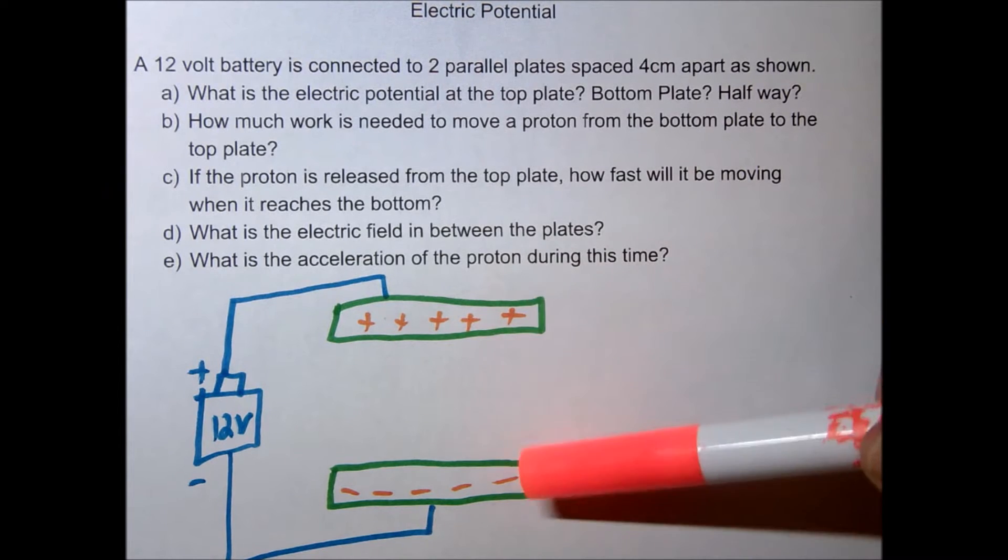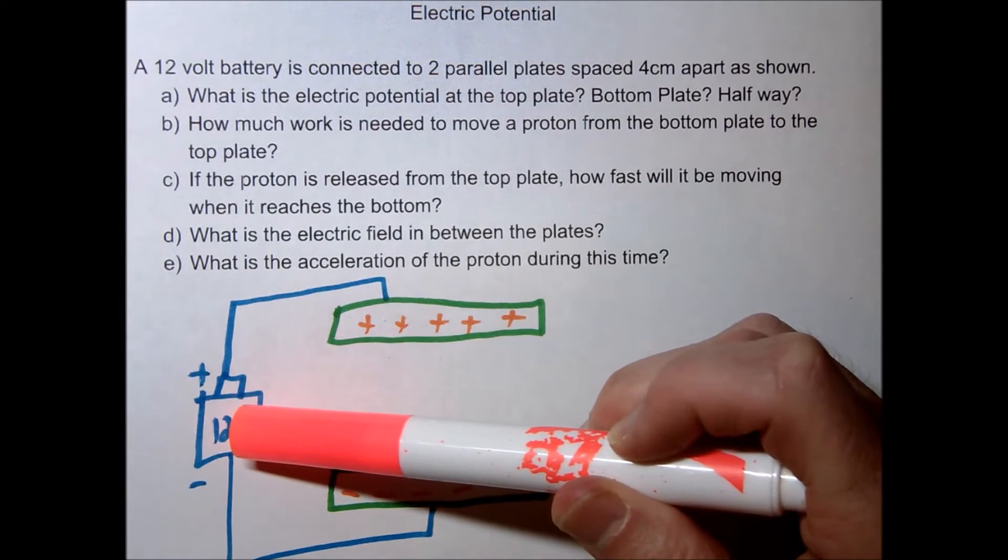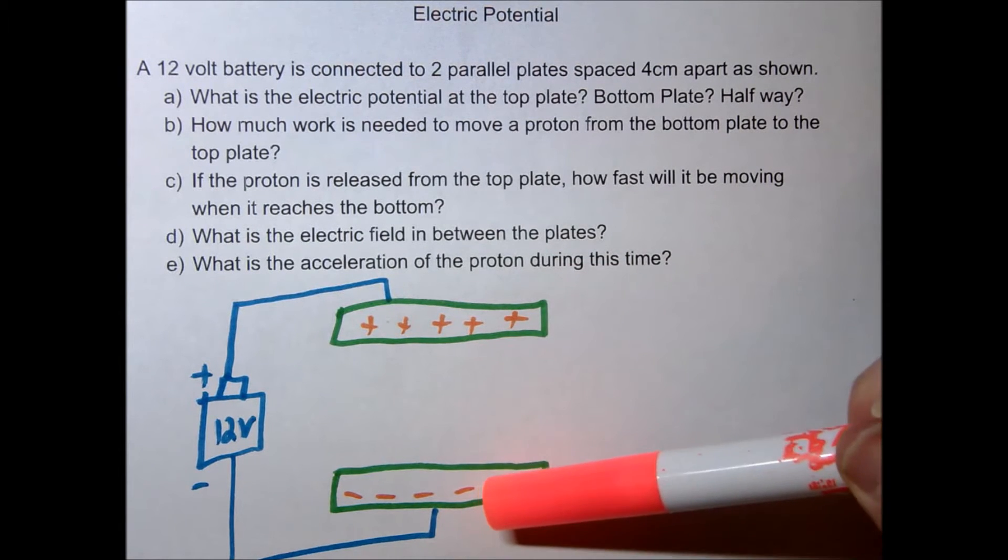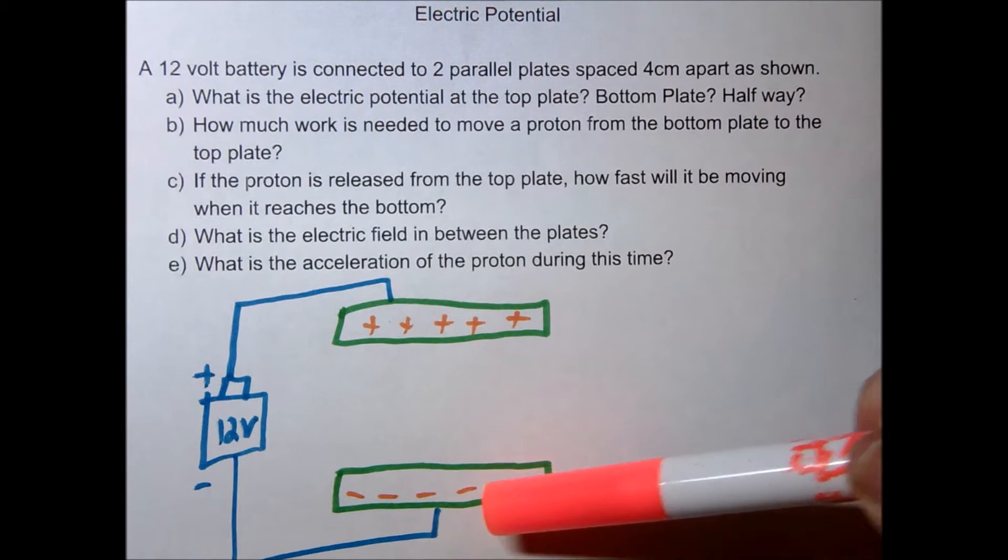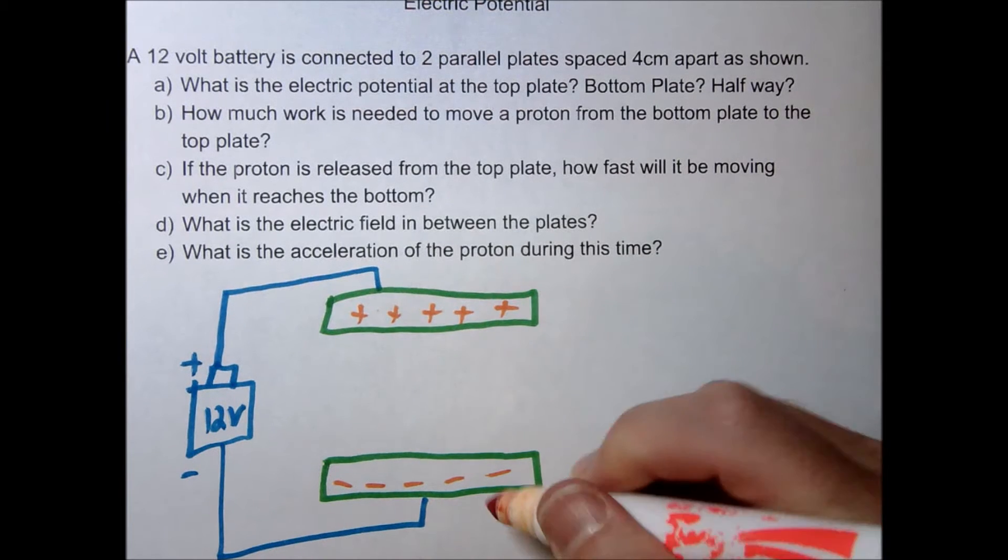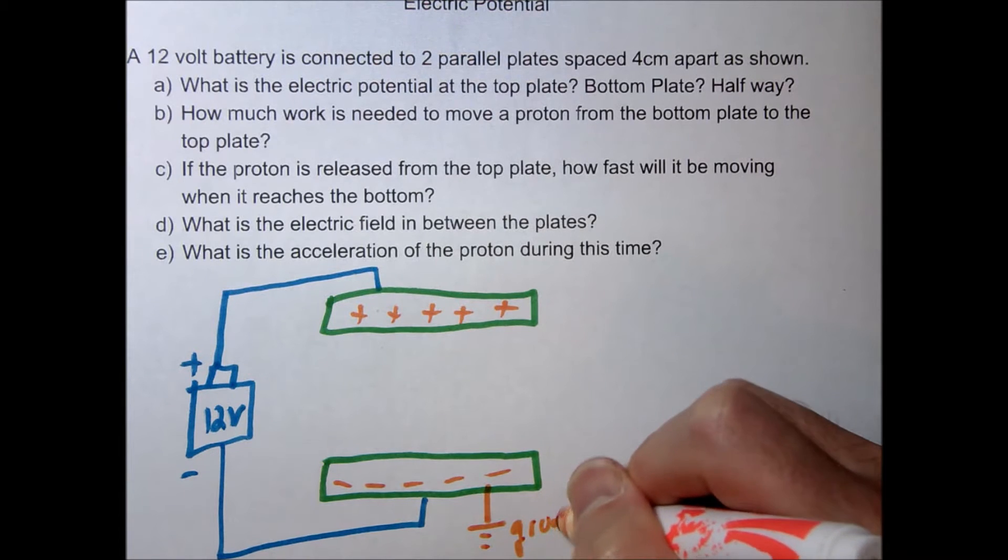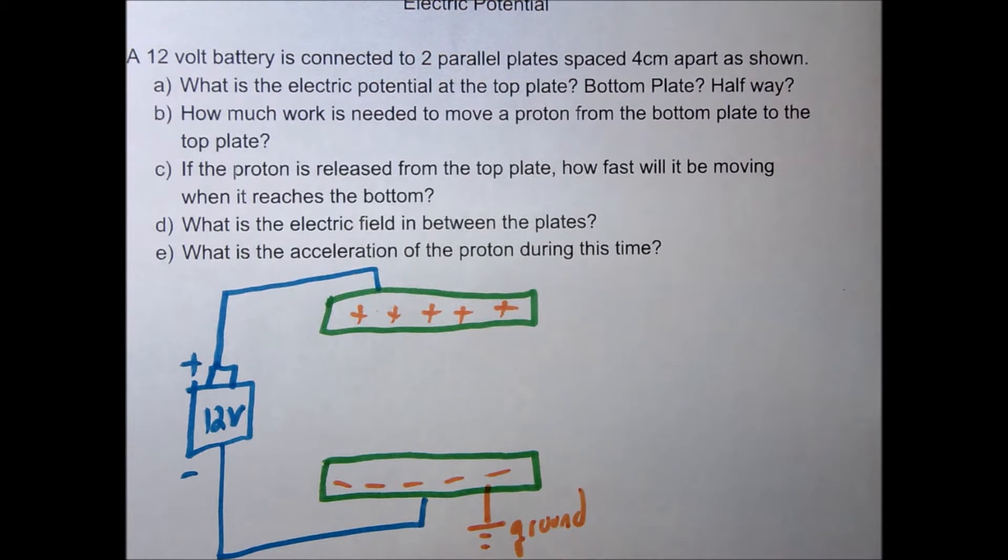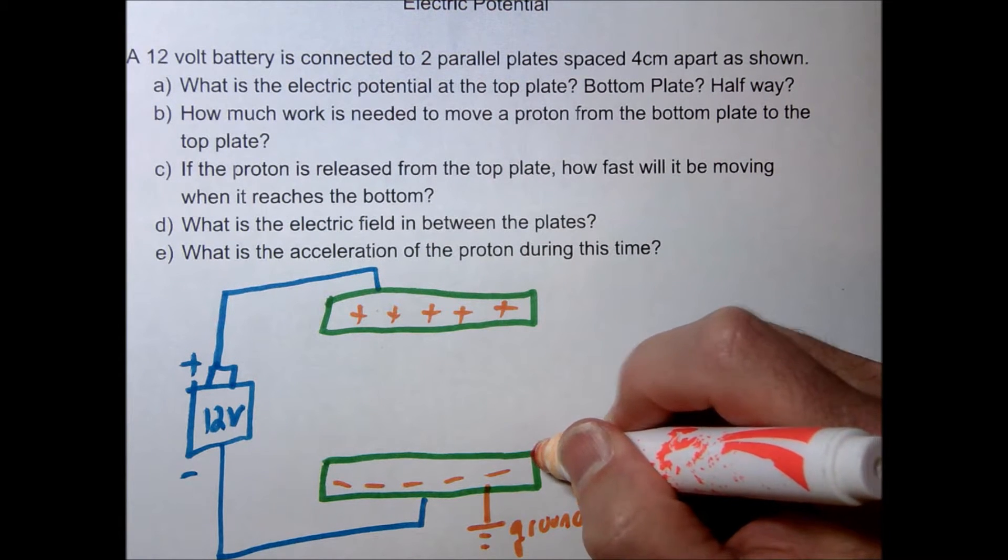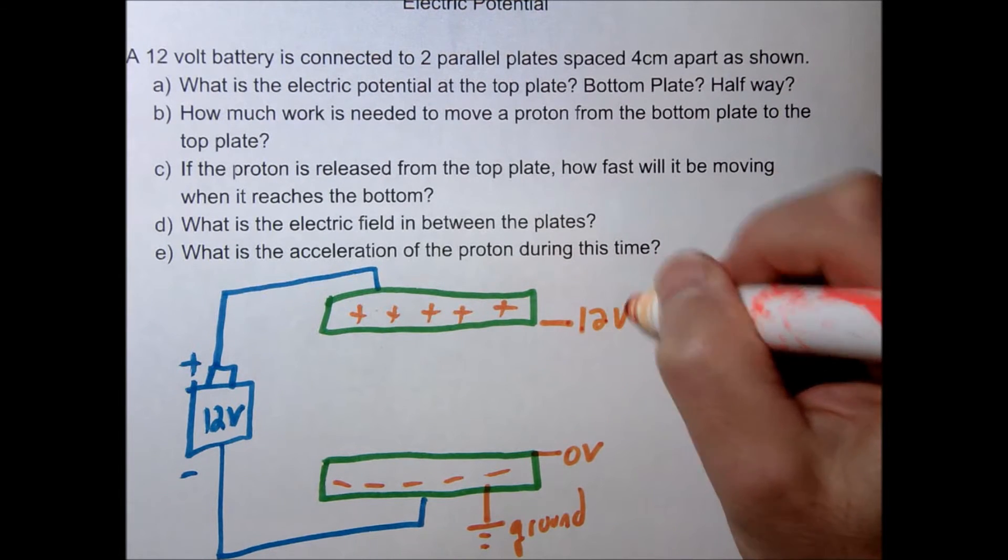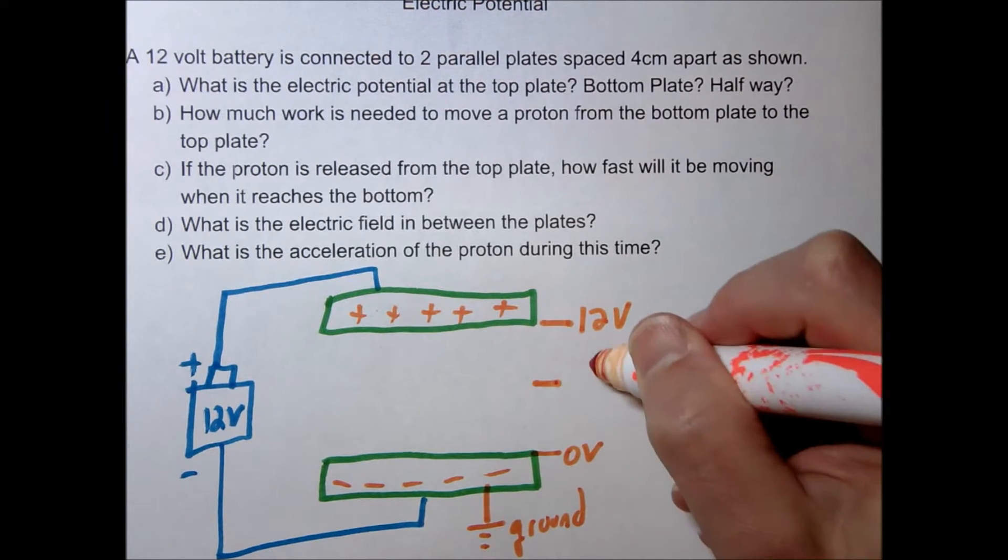The key is the difference between these two has to be 12 volts. So oftentimes for simplicity, we're just going to make the negative plate our zero point. In fact, you've probably heard the word ground used before. The symbol for ground looks like that, and basically that's just defining what your zero volt location is going to be. So knowing that, that means that this would be zero volts, up here would be 12 volts and halfway would be six volts.